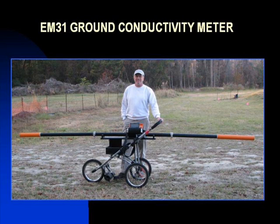The EM31 instrument has an approximate depth of investigation of 18 feet and records apparent ground conductivity as well as in-phase data, which responds to the presence of buried metal. An EM31 survey is commonly used to delineate and characterize landfill cells and buried waste. The survey can also detect changes in soil conditions and lithology.